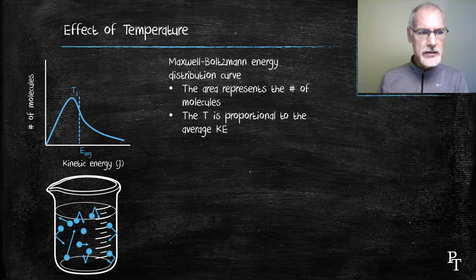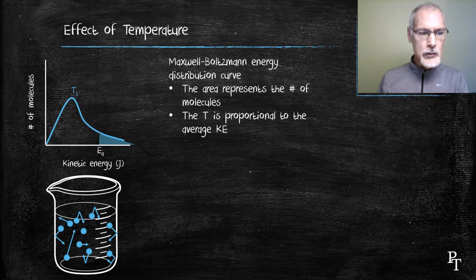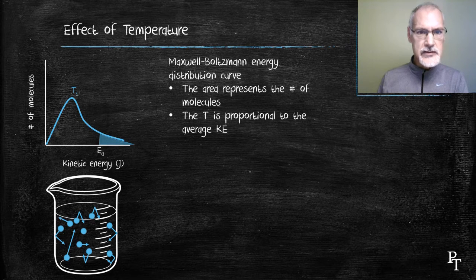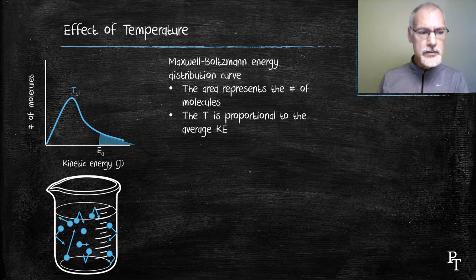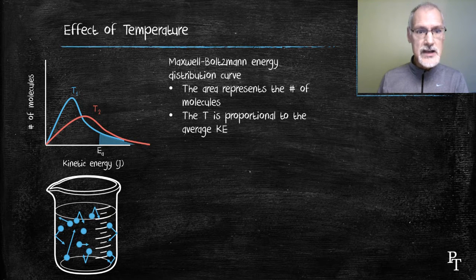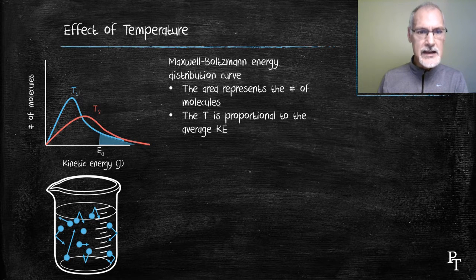At this particular temperature, only a certain number of the molecules can react. I'm going to indicate the required activation energy needed. Species to the right of that have the opportunity to react because they're moving fast enough. But remember, they must also hit at the right angle. If I increase my temperature, I increase the average kinetic energy, shifting the average to the right. But I also must maintain the same area under the curve because I'm not adding particles.